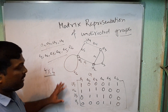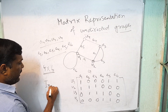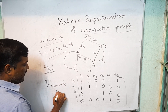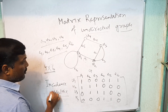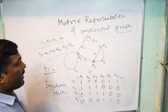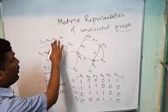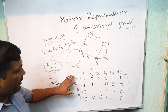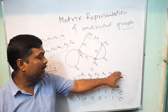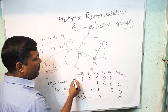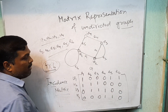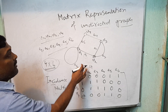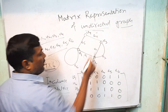So this is the incidence matrix corresponding to this graph G. If the graph has four vertices and six edges, the incidence matrix is of order 4×6. Check whether V1 is incident to E1, V1 incident to E2, and V1 incident to E6. This is the incidence matrix of this undirected graph G.